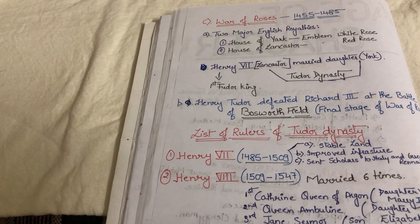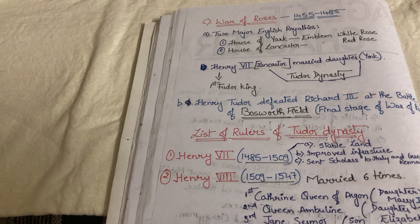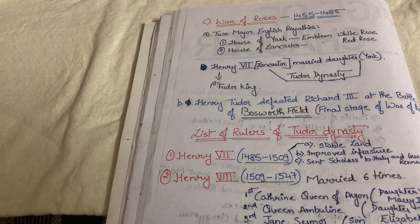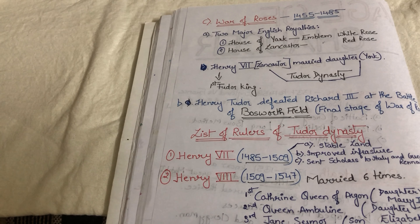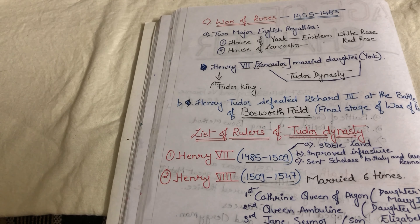Another important event that took place was the War of Roses, from 1455 to 1485. The War of Roses is so called because two royal families in England had roses as their emblems. One was the House of York, with the White Rose, and the other was the House of Lancaster, with the Red Rose. These two royal families were at war, which is why it is called the War of Roses.